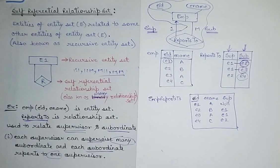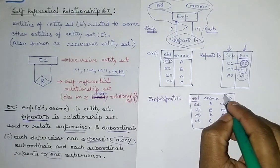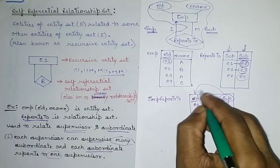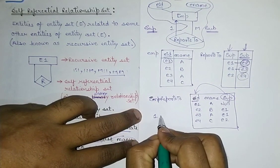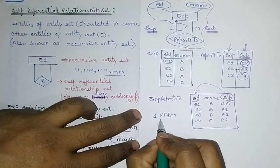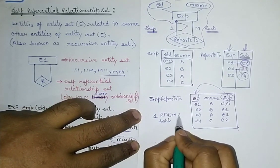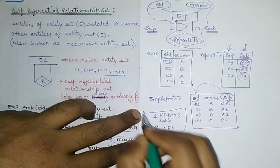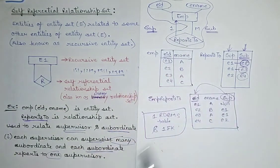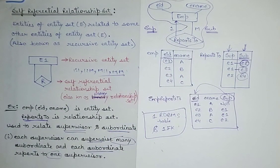Employee ID itself can work as a key. There will be one foreign key, which is supervisor, referring to the employee ID column of the same table. So minimum one table is required and one foreign key is needed. For a one-to-many unary relationship set, we can minimize it into one RDBMS table with one foreign key.